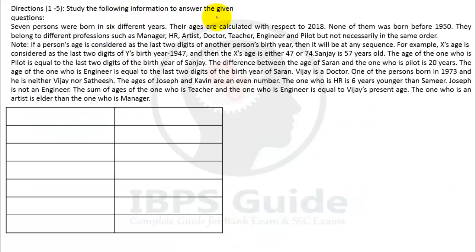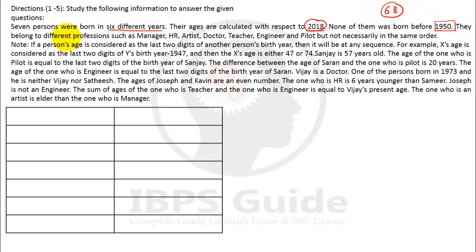Study the following information to answer the given questions. Seven persons were born in 6 different years. Their ages were calculated with respect to 2018, and none of them was born before 1950 — meaning the years go 1951, 52, 53, 63, 73, and the maximum birth year is 1950. The age of any of the seven persons will not exceed 68. They belong to different professions: manager, HR, artist, doctor, teacher, engineer, and pilot — but not necessarily in the same order.